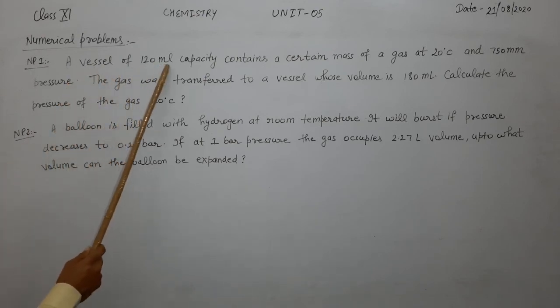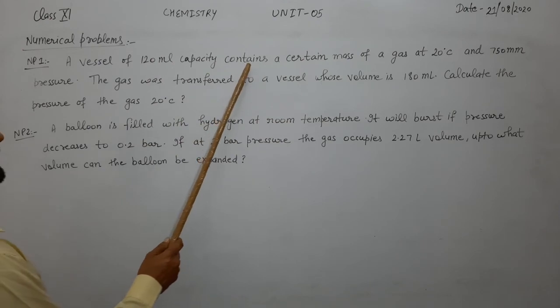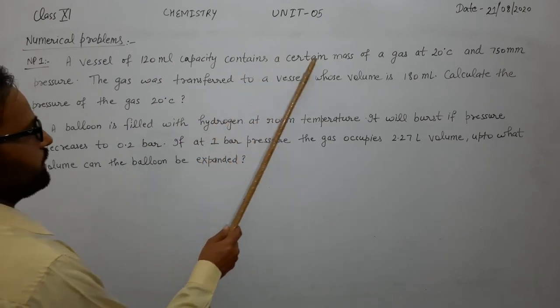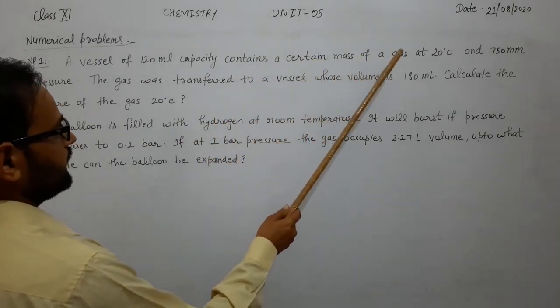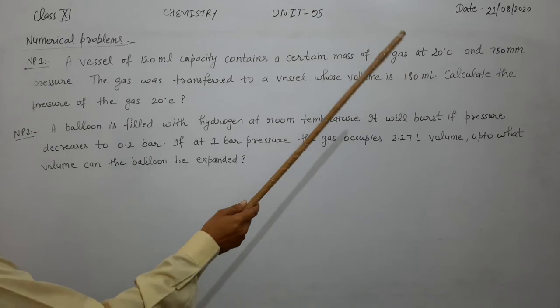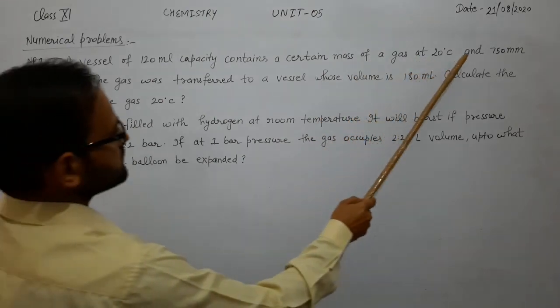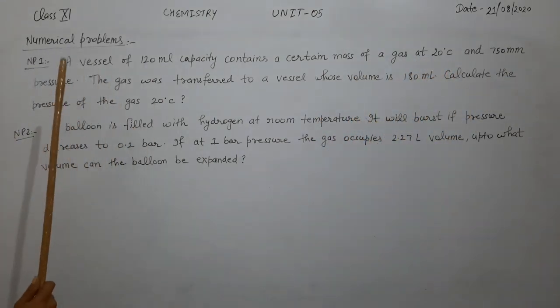Numerical problem first: a vessel of 120 ml capacity contains a certain mass of gas at 20 degree Celsius and 750 mm pressure.